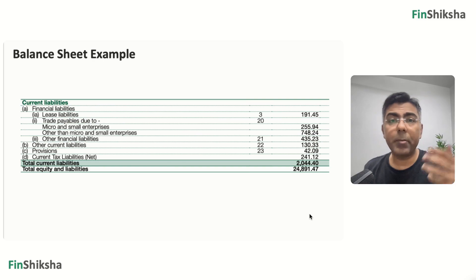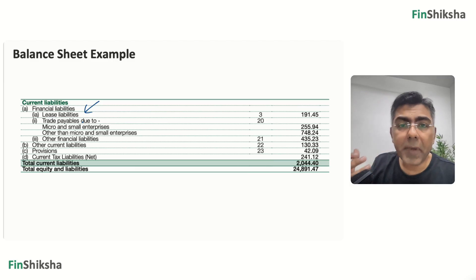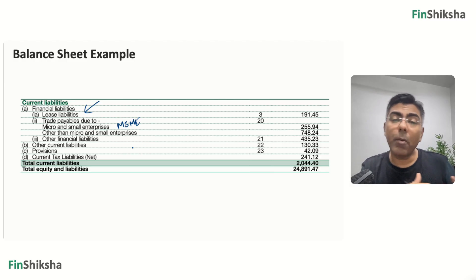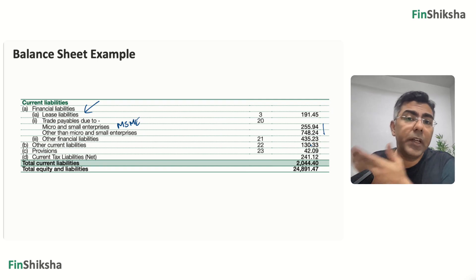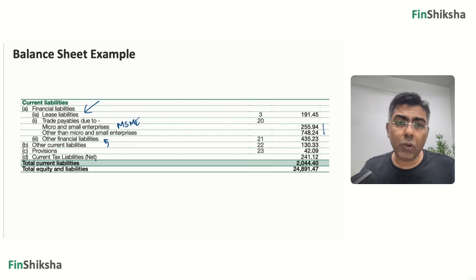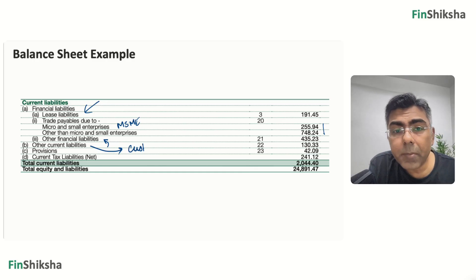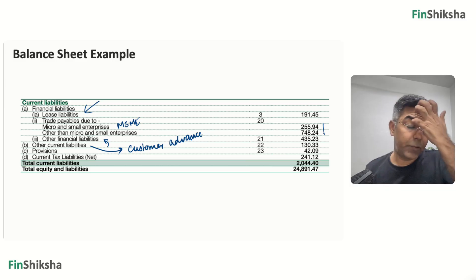Then look at current liabilities — short-term liabilities due to be settled within a year. Once again you see lease liabilities on account of those right of use assets. Then you have trade payables: goods bought from suppliers that you're yet to pay for. As per regulations, you now have to report how much was taken from MSMEs versus entities other than MSMEs, reported separately. Then there are other financial liabilities — the exact opposite of other financial assets. If you have taken a rental deposit from someone, that is another financial liability. Other current liabilities could be customer advances — if a customer has paid you an advance, it's a liability because you're yet to provide goods or services against it.